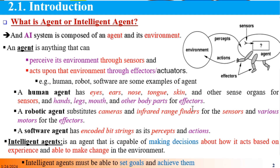This is the introduction of what is the agent, which is an intelligent agent, which is the definition of an AI goal, which is an intelligent agent design, which is an artificial intelligence system, and the component of the agent and environment.